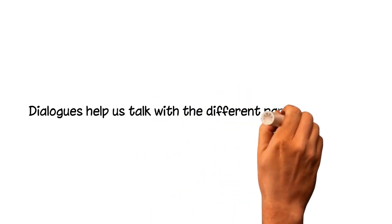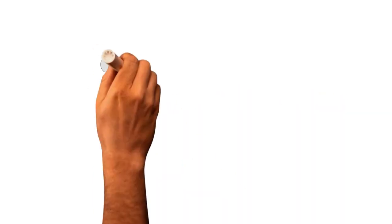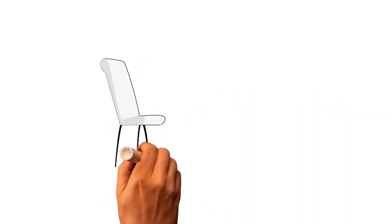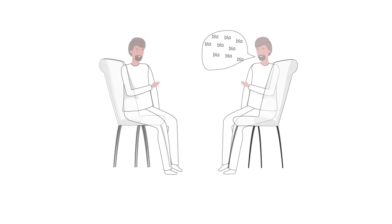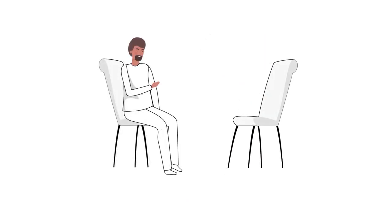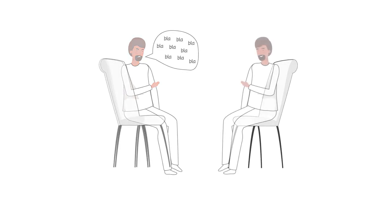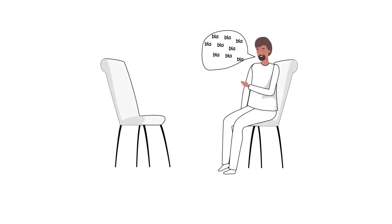Dialogues help us talk with the different parts of ourselves. Ken changes seats and outlines the reasons why he wants a child. Returning to his first chair, Ken responds with the reasons why he doesn't. Ken switches between the two chairs so that the two sides can have a conversation with one another. As he moves back and forth between the seats, Ken begins to reach a decision.